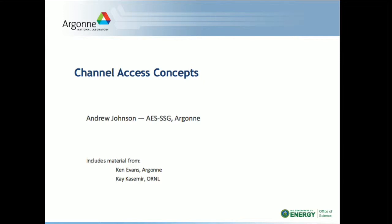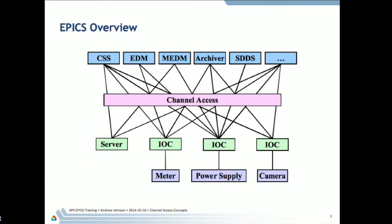Let's get started with this first lecture: channel access concepts. As a reminder from the introductory lecture, this is the model of EPICS. We've got channel access clients along the top in blue, and in green there are channel access servers — mostly IOCs, but they don't have to be. The IOCs talk to our actual hardware equipment, and channel access is the software layer that connects servers to clients.